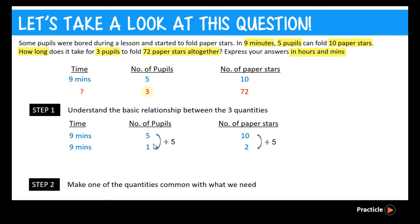So here, we will want to make 1 pupil into 3 pupils. And we do that by taking 1 multiplied by 3. So same thing, we also need to take 2 multiplied by 3. And we will get something like this. 3 pupils can fold 6 paper stars in 9 minutes. So far, so good?